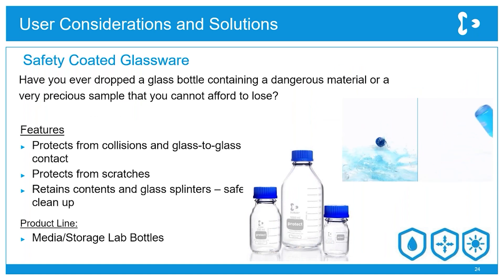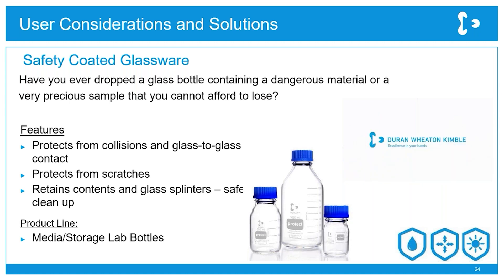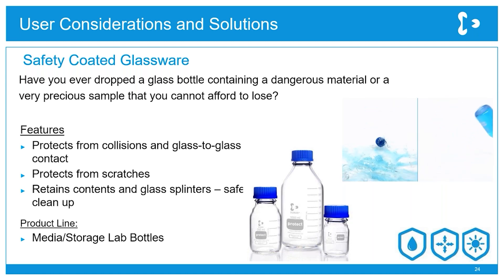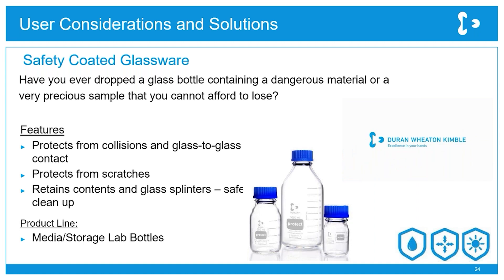We also have a range of safety-coated glassware. The major advantage of the plastic coating is that it protects from some of the disadvantages of glassware — it protects from scratching, and also if you do drop the bottle and it breaks, the plastic coating keeps everything together, giving you more time to transfer the contents from the broken bottle into a new container.